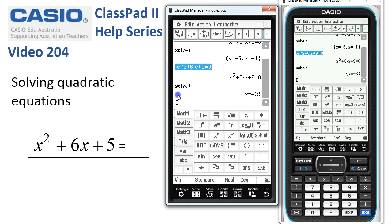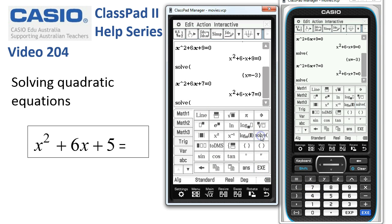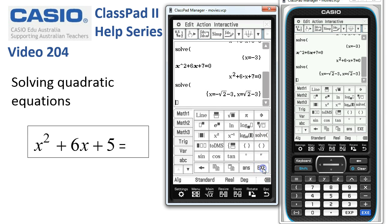If the quadratic had been of this form, where we had plus 7 at the end, and I tap Execute and ask Classpad to solve it, this time when I press Execute, we get some thirds show up in our answer.